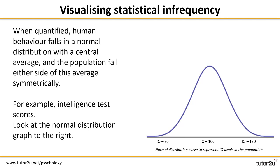Let's take a look at this in more detail. You can see from the line that has appeared on your screen, right in the middle of the graph, that this will be where our average score for intelligence falls.